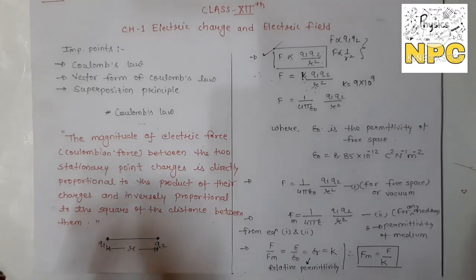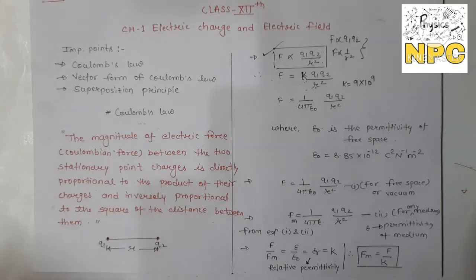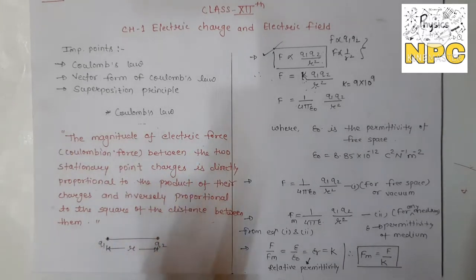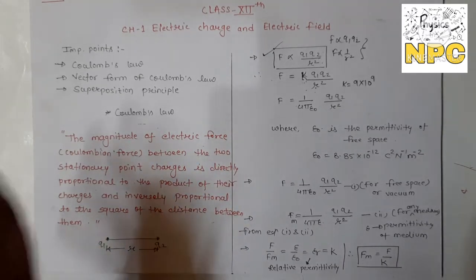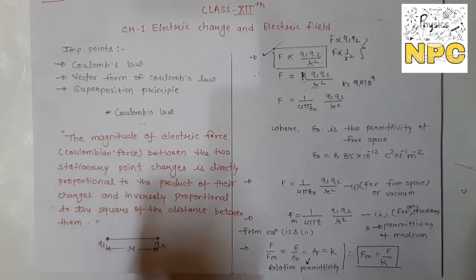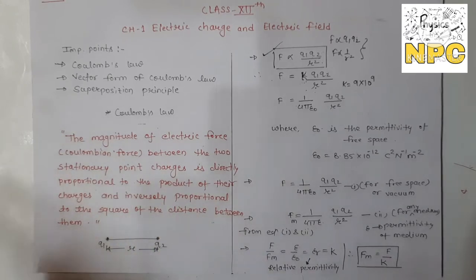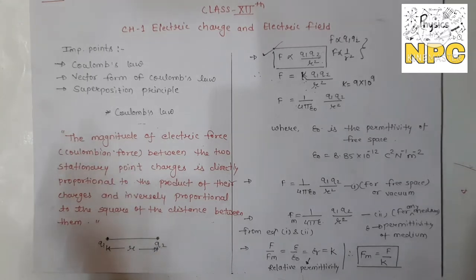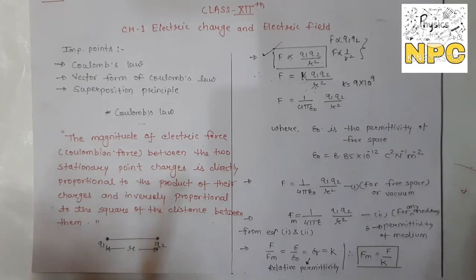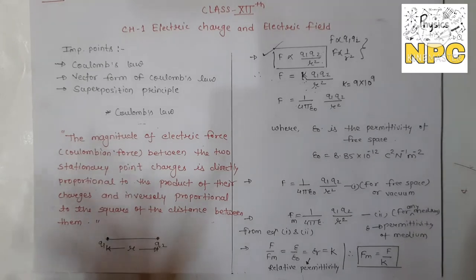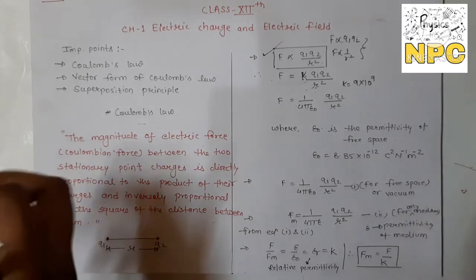As we all know about charges — we discussed charges in the last class. Charges are of two types: positive and negative. Like charges repel each other and unlike charges attract each other. So there will be two forces generated between the charges: first repulsive and second attractive. Now the question arises — can we calculate the amount of attractive as well as repulsive force? The answer is yes, we can calculate it with the help of Coulomb's law.